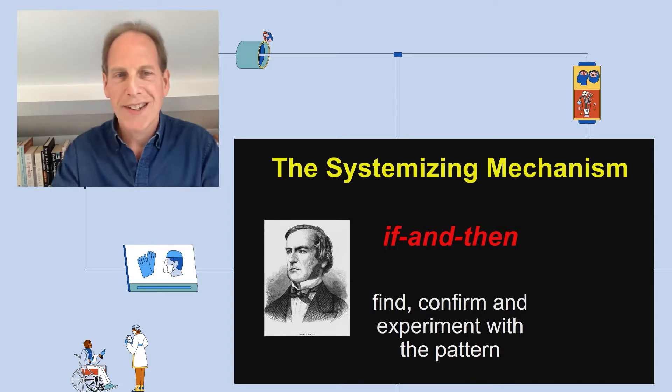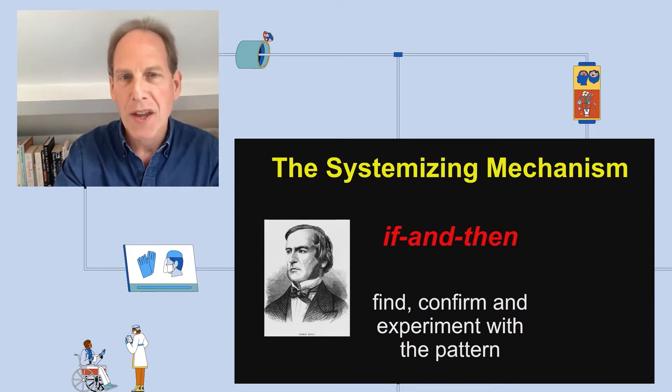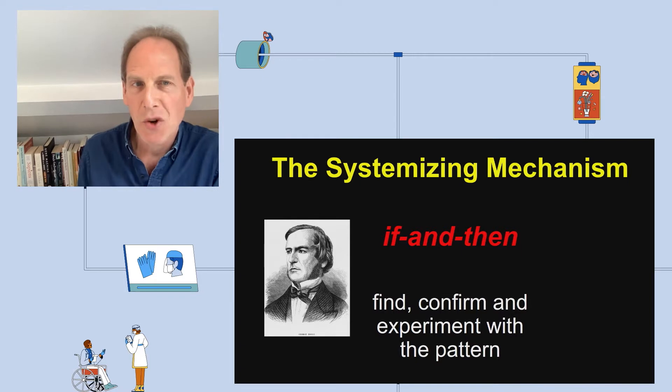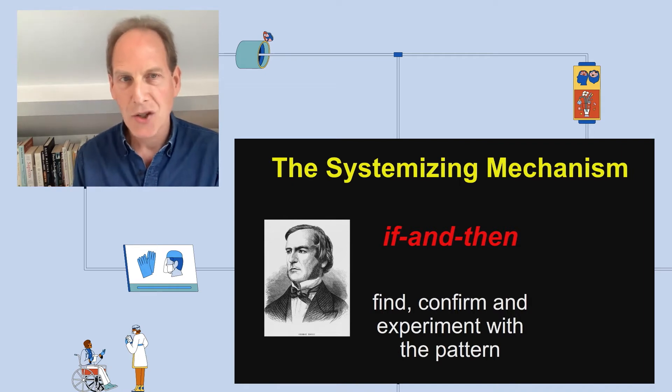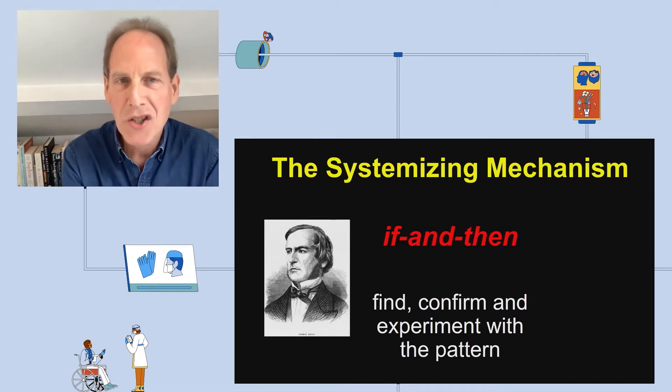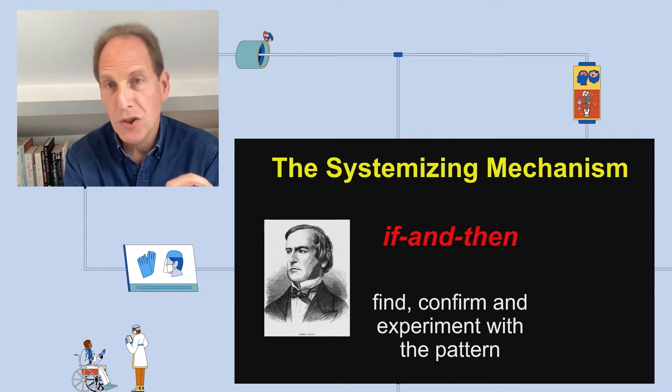So what was this cognitive revolution? Well, there were two new circuits in the human brain, and the first of these I call the systemizing mechanism. This allowed humans to look for special patterns in the world, patterns that I call if-and-then patterns. These are the basis of any system: if I take something and I do something to it, then I get an outcome. The systemizing mechanism allowed us to analyze the world, to find such patterns, and then to confirm that they hold true.